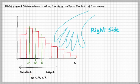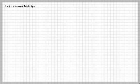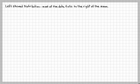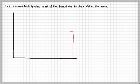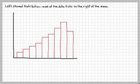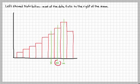Let's move on to left skewed distribution. That is defined as most of the data falls to the right of the mean. Let's draw a distribution and look at some of its properties. If we draw a line at the most data, that would be the mode. To the left of it would be the median, and then we have X-bar, which is the sample mean. The median is in the middle between the two.